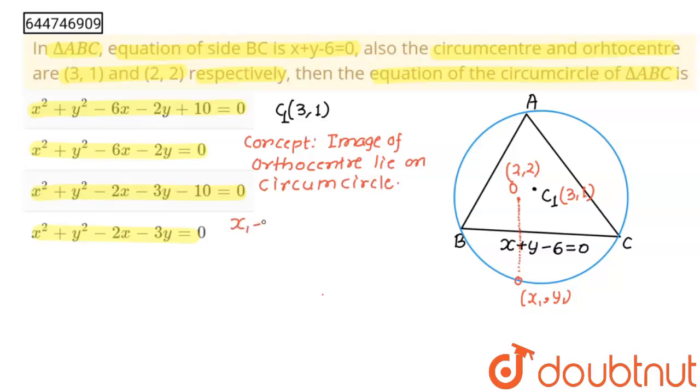So I will write (x1-2) upon coefficient of x which is 1 equals to (y1-2) upon coefficient of y which is 1 equals to—this is image—so minus 2 times, we will put (2,2) at place of (x,y). This will become 2+2-6 upon a²+b². Coefficient of x is a, coefficient of y is b, so this will be 1+1.